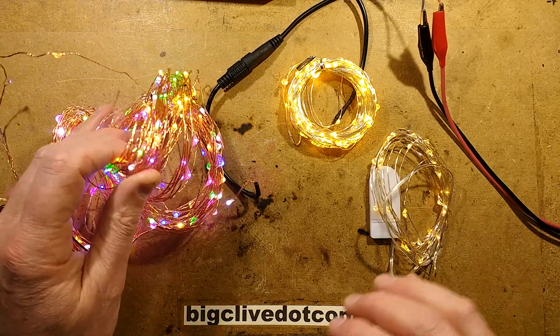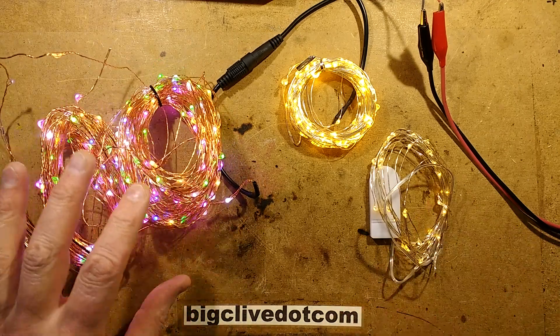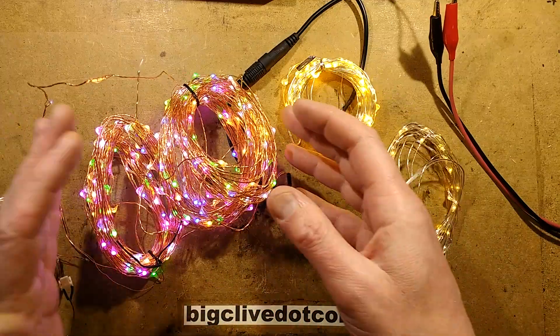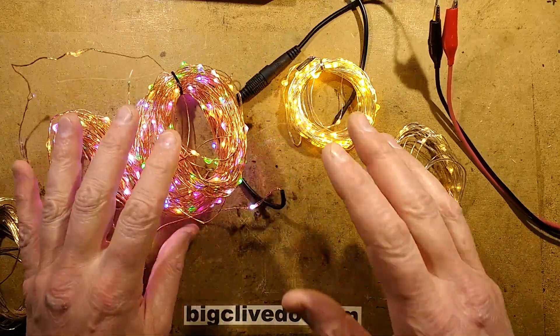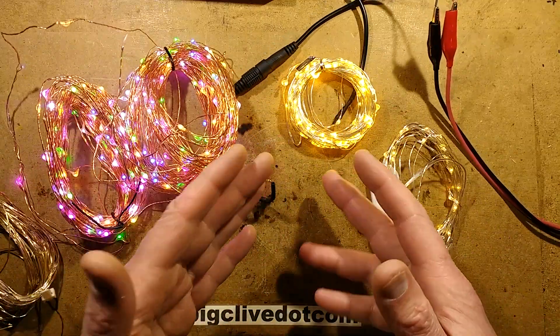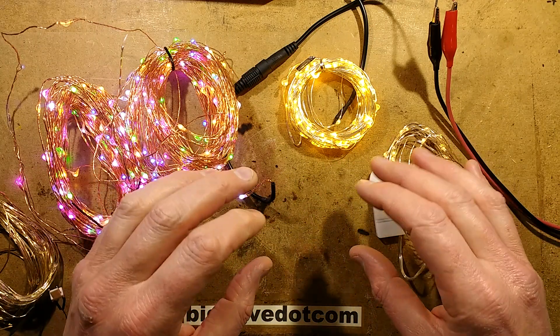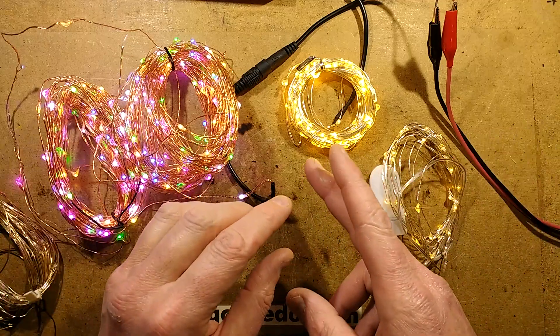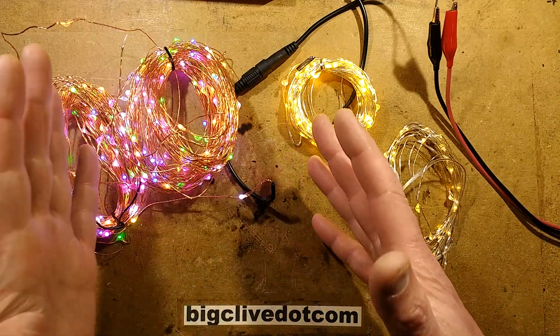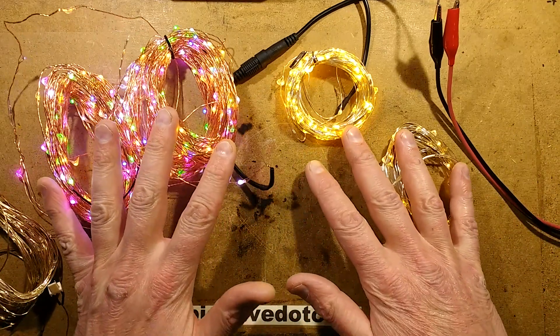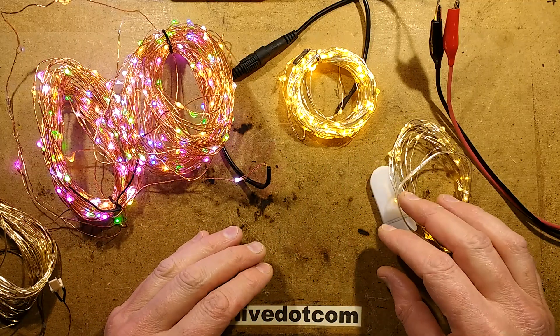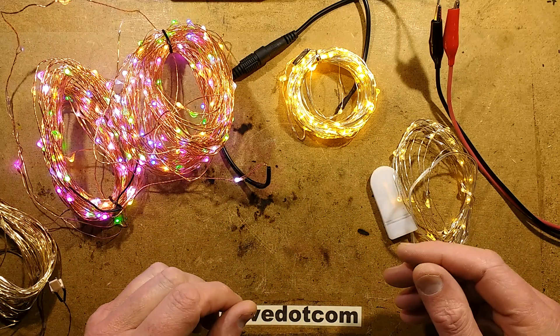The copper wire LED strings are getting really popular these days, mainly because they're very easy to manufacture. A few people have said they've either damaged them and the whole string's gone out, or they've tried to cut them down to length and the whole chain has gone out. So this video is about how to fix them if they are fixable, which they usually are.